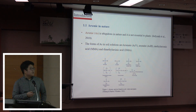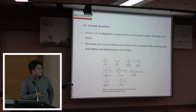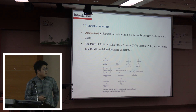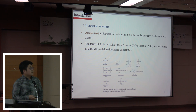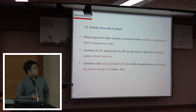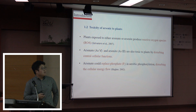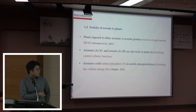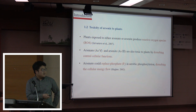Arsenic has various forms in nature, and those forms of arsenic can be toxic to plants, humans, and any other living organisms. Inorganic arsenic can produce reactive oxygen species in plants and can be toxic, and especially arsenic can replace phosphate and disturb the cellular energy flow.